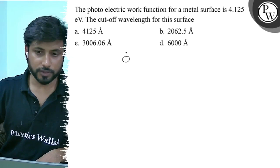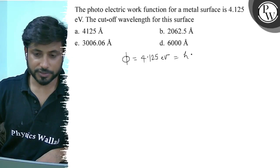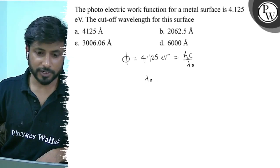Okay, the work function is 4.125 electron volts. The cutoff wavelength is lambda naught. Phi equals hc divided by lambda naught. So we will solve for lambda naught here.